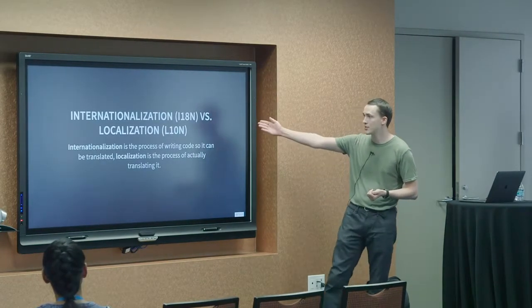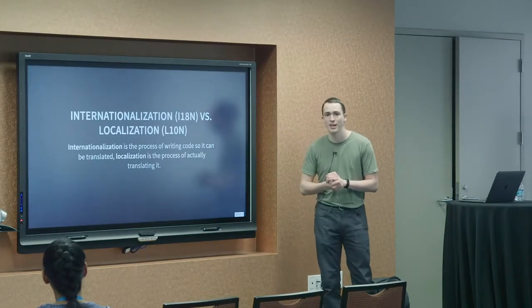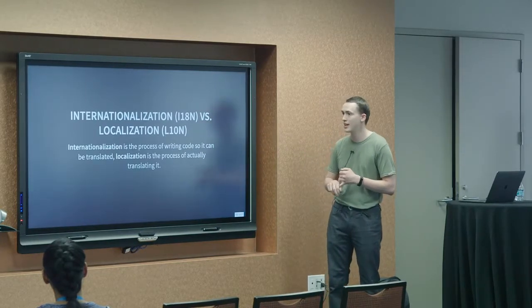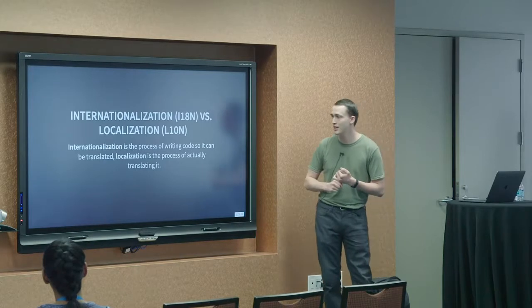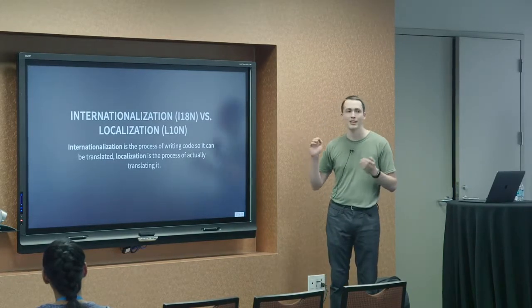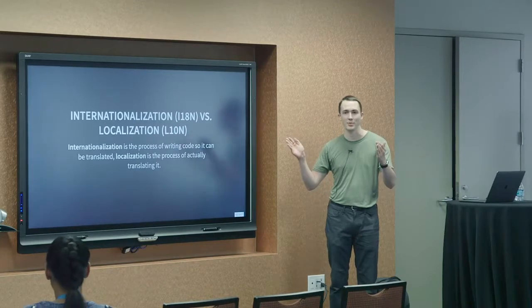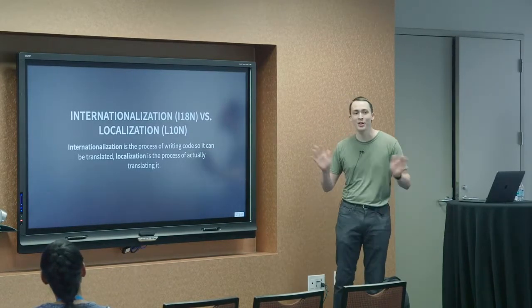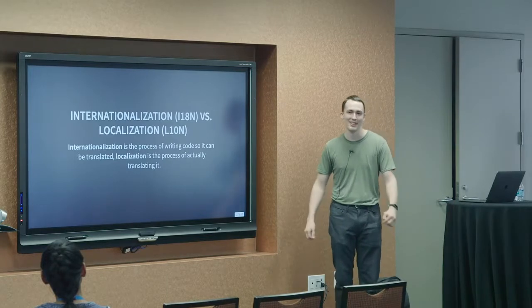The abbreviations used in the WordPress community, internationalization is abbreviated I18n and localization is abbreviated L10n. The numbers represent how many letters are between the first and last letter in the word. So it's incredibly complicated how they came up with that.